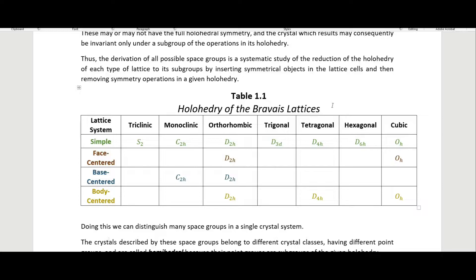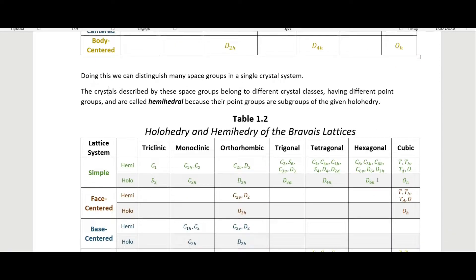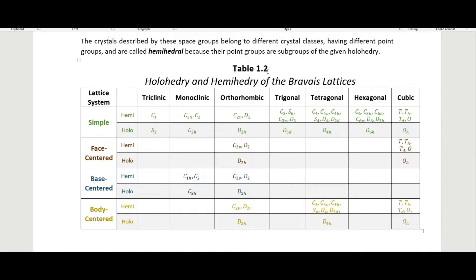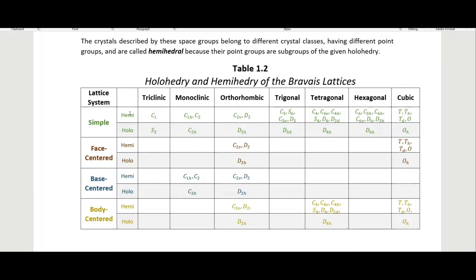These are the point groups of these types of lattices. The actual lattices have a point group because you can rotate and reflect them and should be able to get them to superimpose on the lattice again. By doing this we can distinguish many groups in a single crystal system. These are called the hemihedri — hemihedral — because their point groups are subgroups of the given holohedry. So this table shows the holohedry and hemihedri of the Bravais lattices, with the holohedry in the gray rows.